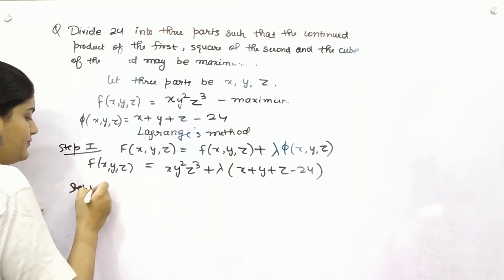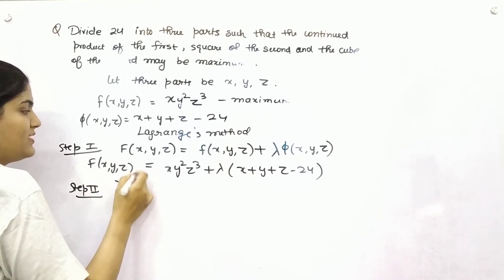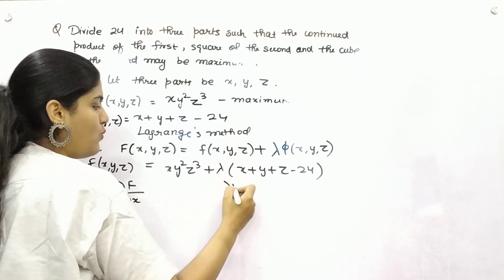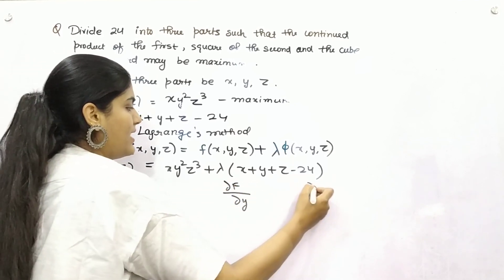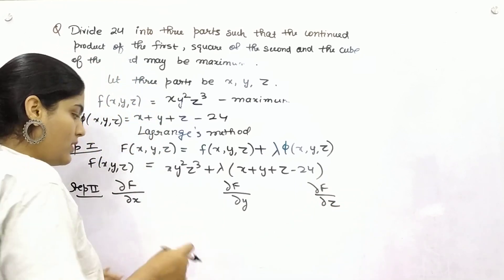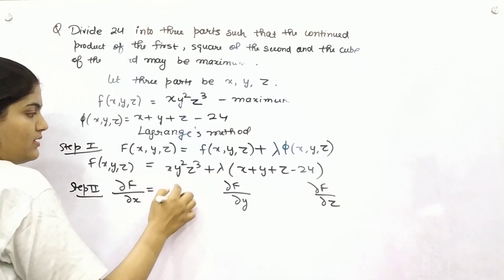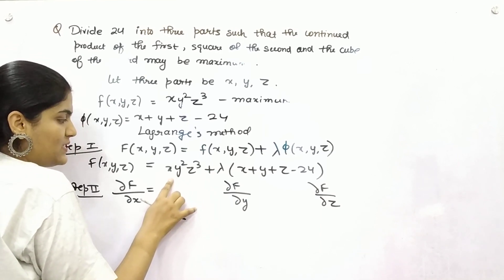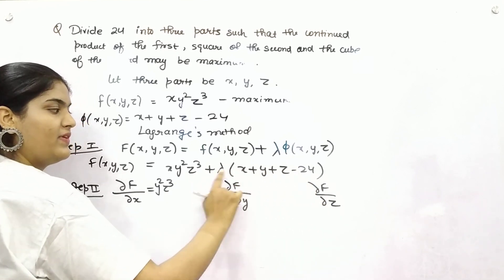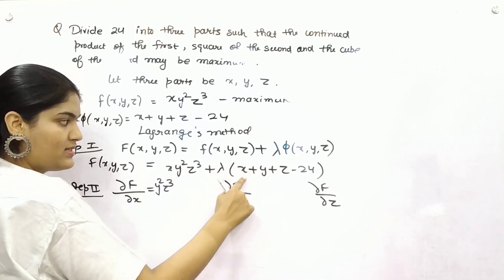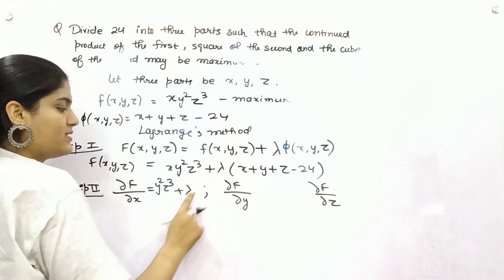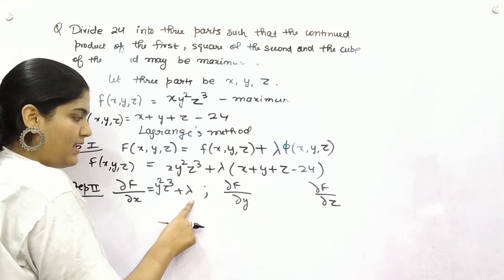So your step 2 is partial differentiation of main function with respect to x, y, and z, and you have to put it as 0. So here what is it? If you differentiate it with respect to x, it is y² z³, and if you differentiate partially with respect to x, rest all will be constants. Only lambda will be left. So differentiation of lambda x will be lambda.